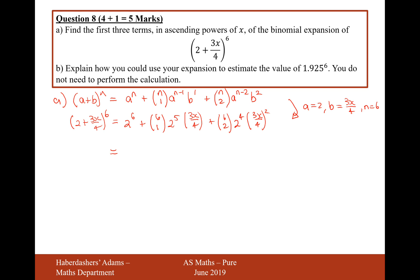So we just need to now simplify this. And when we simplify this, it's going to give us 64 plus (6 choose 1) times 2^5 times 3 divided by 4. That will give us 144x. And then (6 choose 2) times 2^4 times 3 squared over 4 squared. Remember to square the 3 and square the 4, and you get 135x squared.